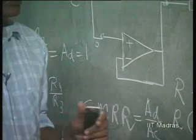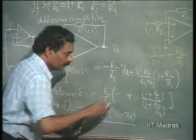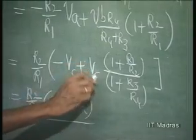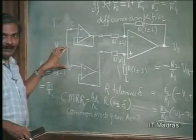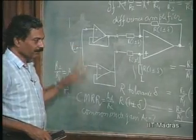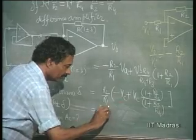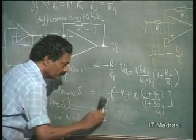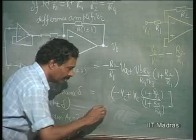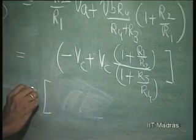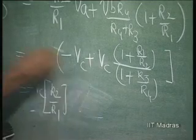This is an important result: if the instrumentation amplifier is designed using resistors of tolerance δ, the worst-case common mode gain is 2δ, and CMRR = 1/(2δ). For ordinary 5% resistors, δ = 0.05, so CMRR = 1/(2×0.05) = 10 — a very poor value. Therefore, precision resistors must be used to get good common mode rejection ratio.